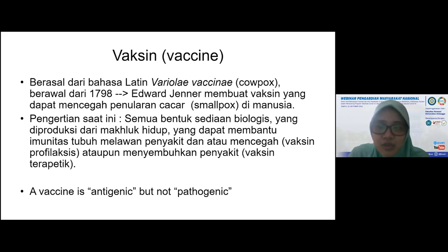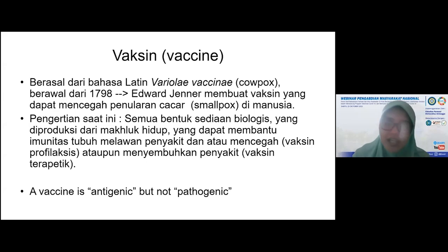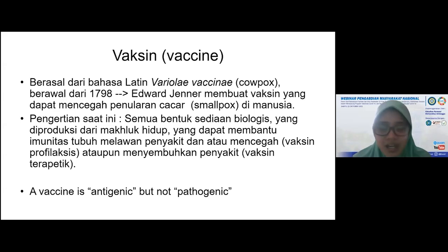Pengertian vaksin adalah bentuk sediaan biologis yang bisa untuk profilaksis atau pencegahan, juga terapetik. Terapetik saat ini seperti vaksin-vaksin untuk penyembuhan kanker. Suatu vaksin merupakan antigenik tapi bukan patogenik. Jadi vaksin ini sumbernya adalah makhluk hidup itu sendiri, yaitu mikroorganisme itu sendiri. Namun tidak semua mikroorganisme bisa digunakan untuk vaksin. Yang dipilih adalah yang antigenik, yang dapat meningkatkan respon imun kita tanpa ada proses patogenitas, yaitu proses penularan bila dimasukkan ke tubuh manusia.